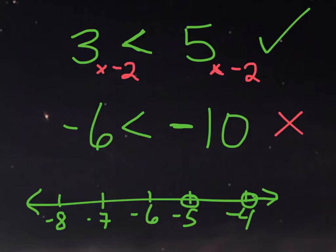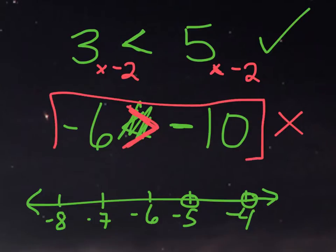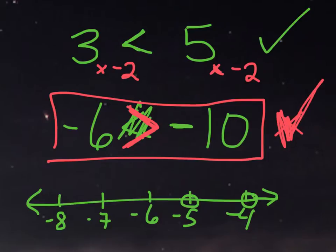So to make this true, we would actually have to reverse the sign or symbol here. Instead of it being less than, we should write greater than to make this true. So negative 6 is greater than negative 10, and that is correct. What I'm trying to get at is: anytime you multiply or divide an inequality by a negative number, you actually have to flip the sign. So if it's less than, it becomes greater than. If it's greater than or equal to, then it's going to switch to less than or equal to.